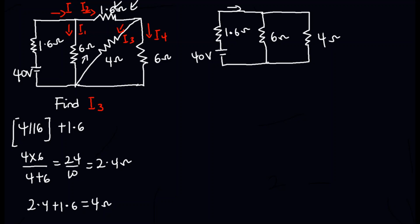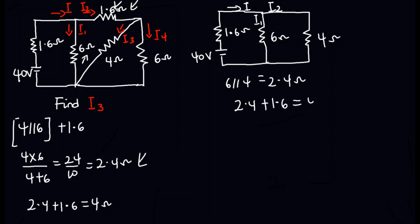We have the total current i, with i1 and i2 labeled. The 6 ohms in parallel with the 4 ohms again gives 2.4 ohms, and this 2.4 ohms is in series with the 1.6 ohms, so we have 2.4 plus 1.6 which gives us 4 ohms again.